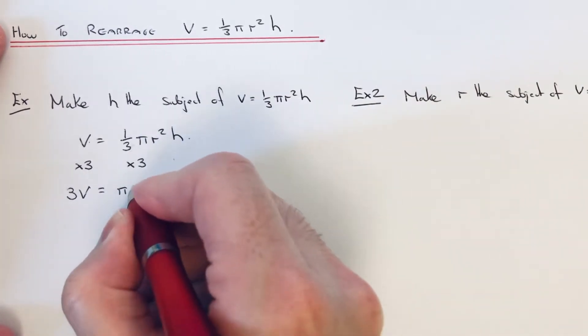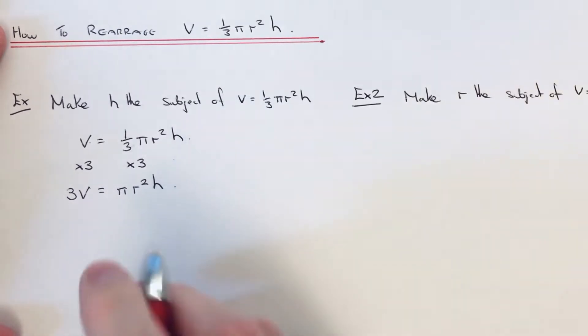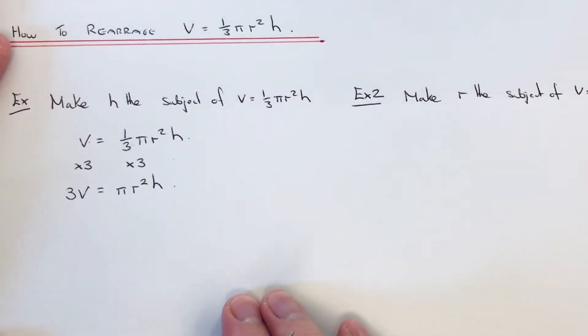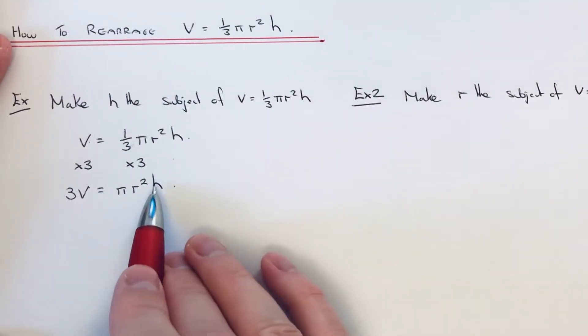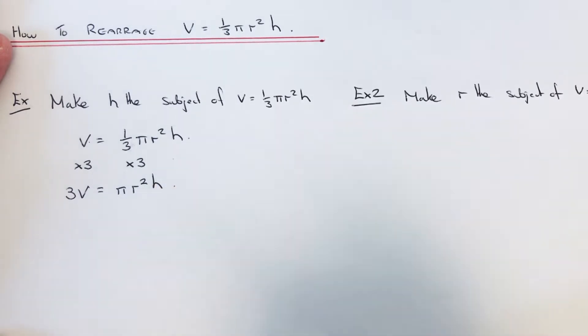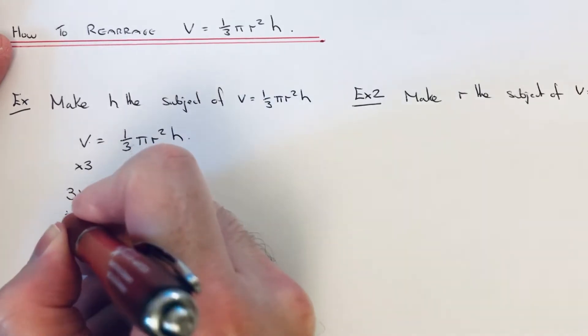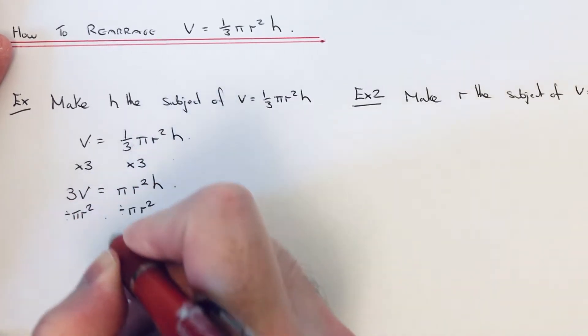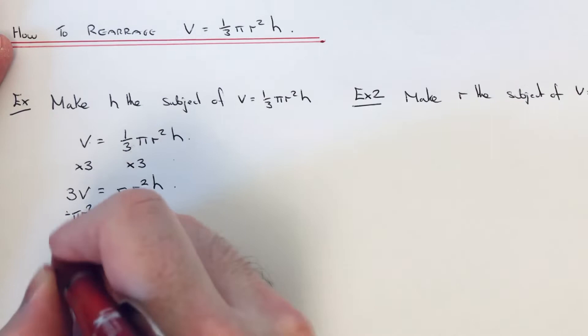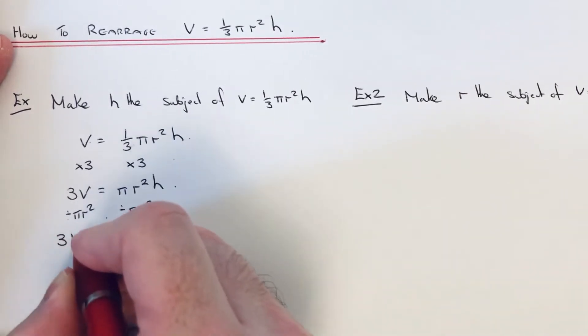h is now being multiplied by πr², so the opposite would be to divide by πr². On the left-hand side we'll have 3V over πr² equals h.